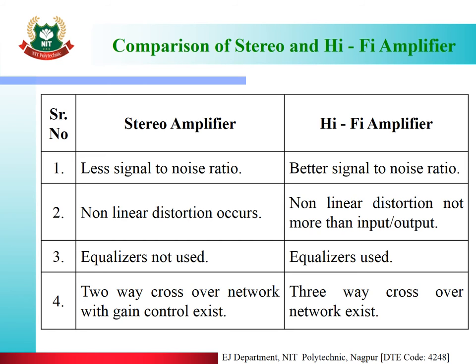Now the comparison of stereo and hi-fi amplifier. In a stereo amplifier the signal to noise ratio is less, but in a hi-fi amplifier the signal to noise ratio is better. Non-linear distortion occurs in a stereo amplifier, but in a hi-fi amplifier non-linear distortion is not more than 1% of input or output. Equalizers are not used in a stereo amplifier, but in a hi-fi amplifier equalizers are used. In a stereo amplifier a two-way crossover network with gain control exists, but in a hi-fi amplifier a three-way crossover network exists.